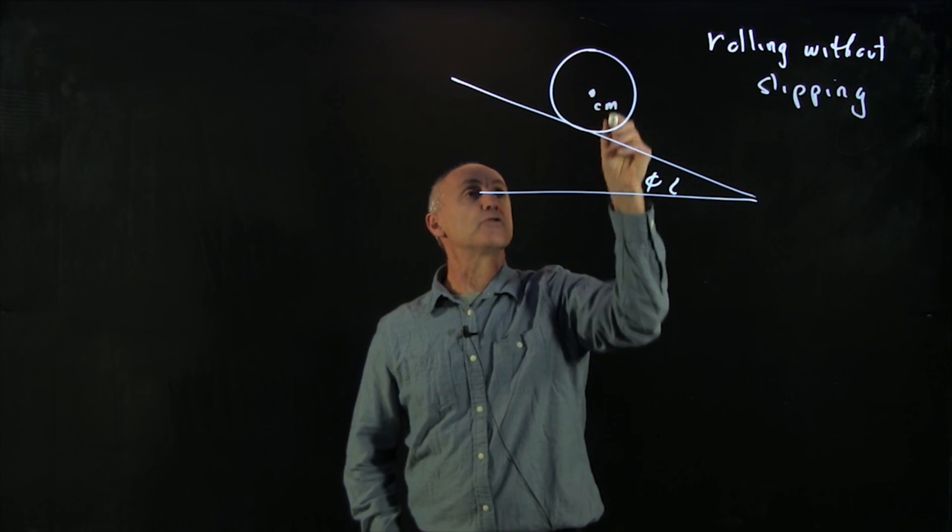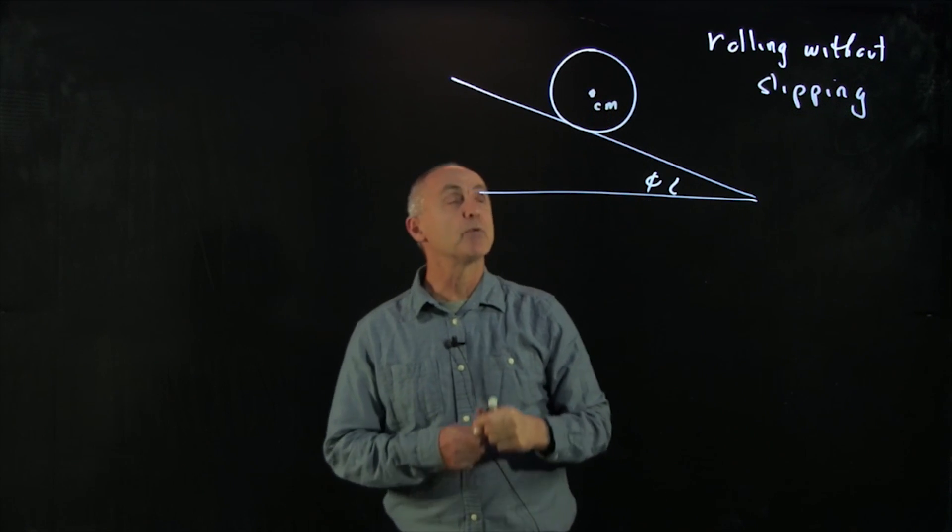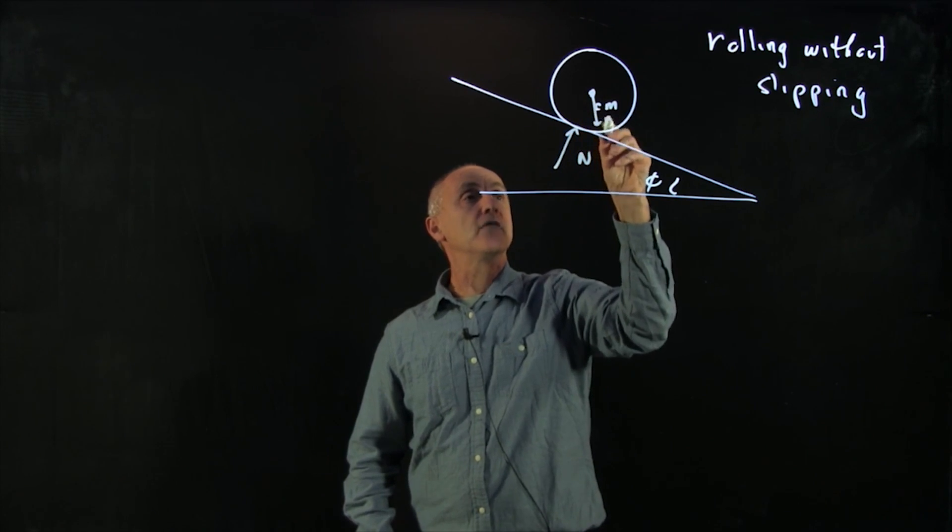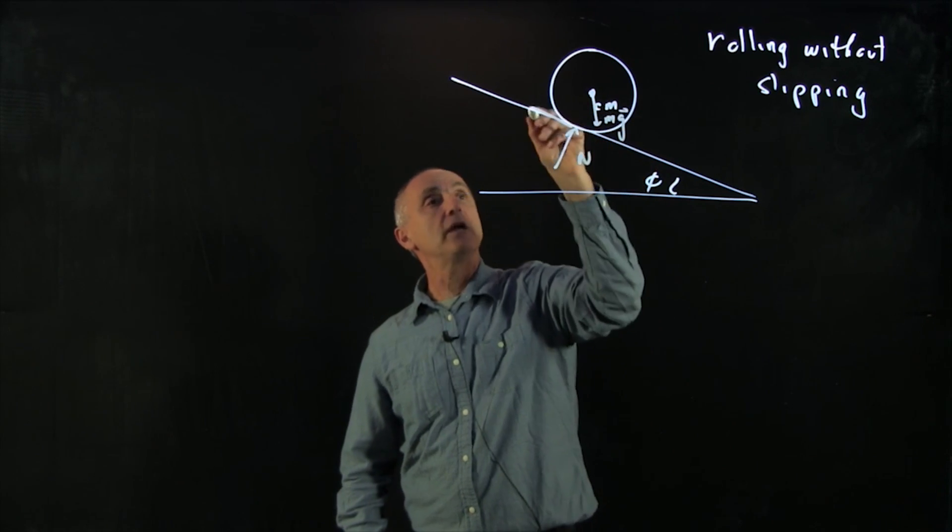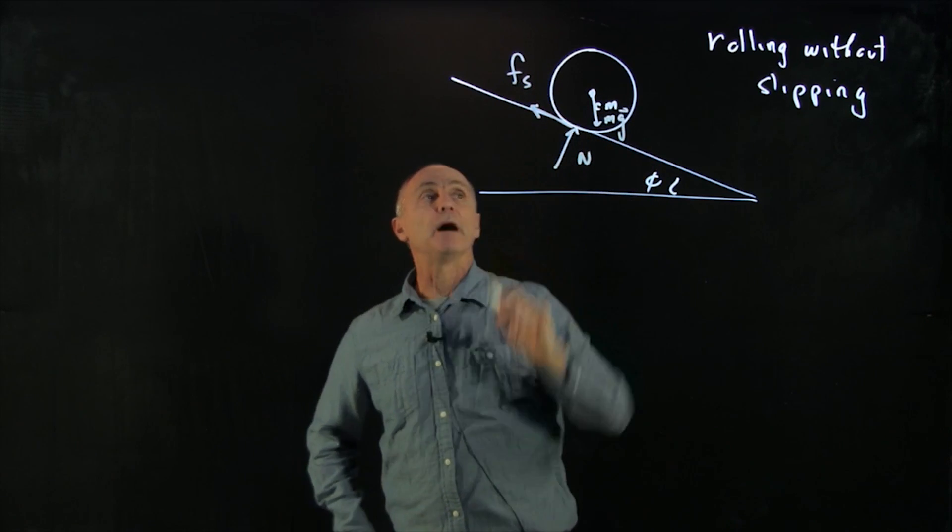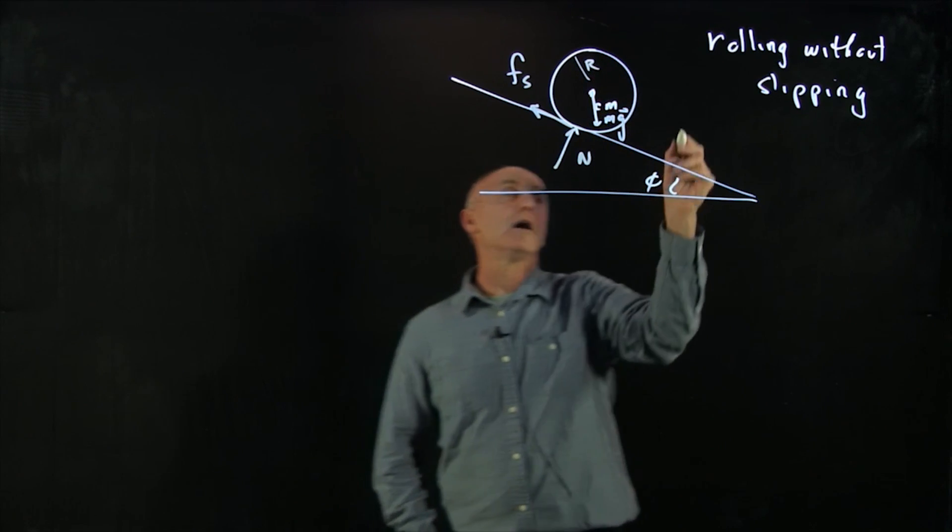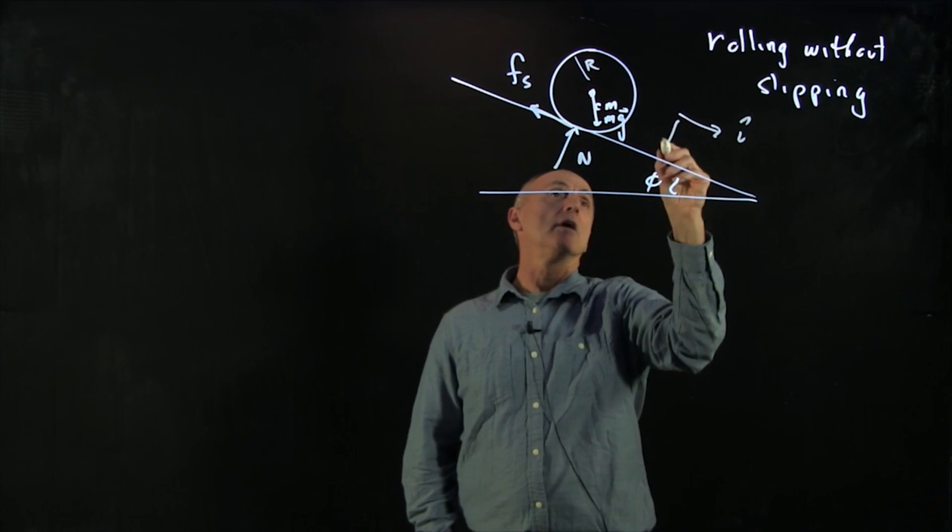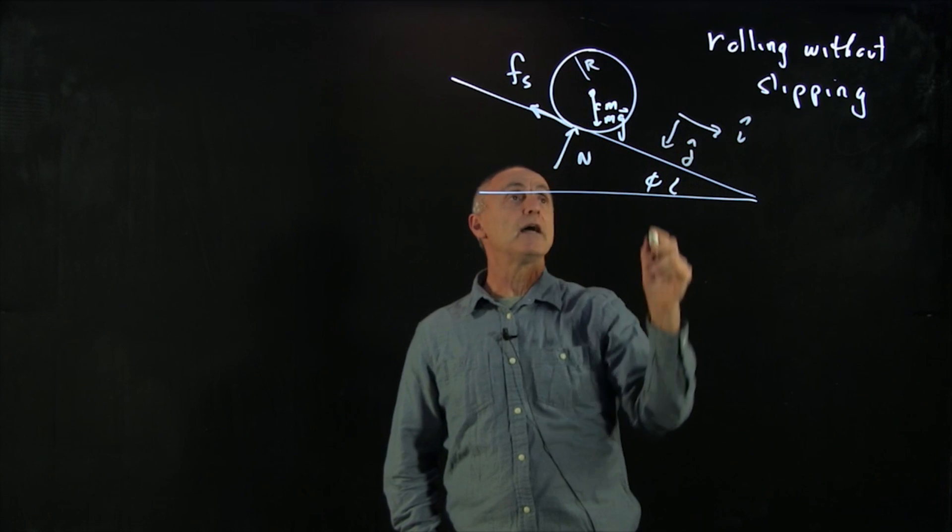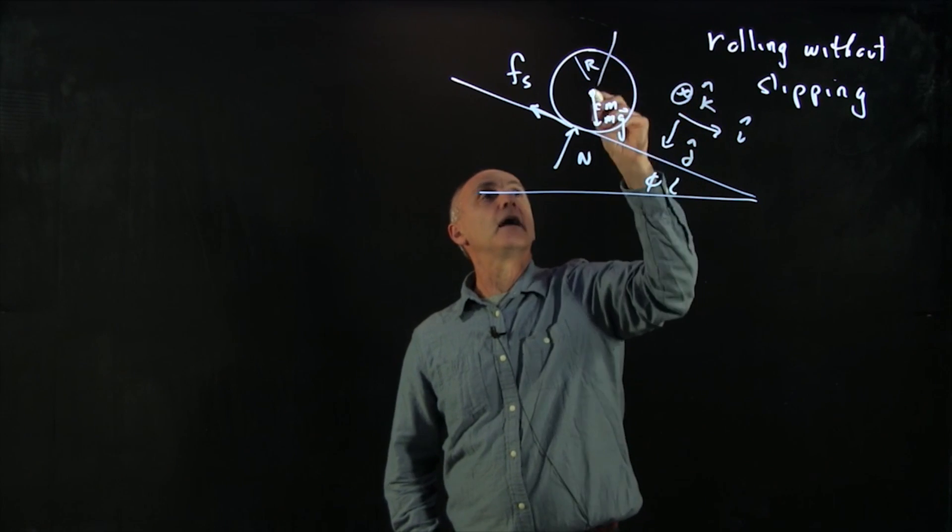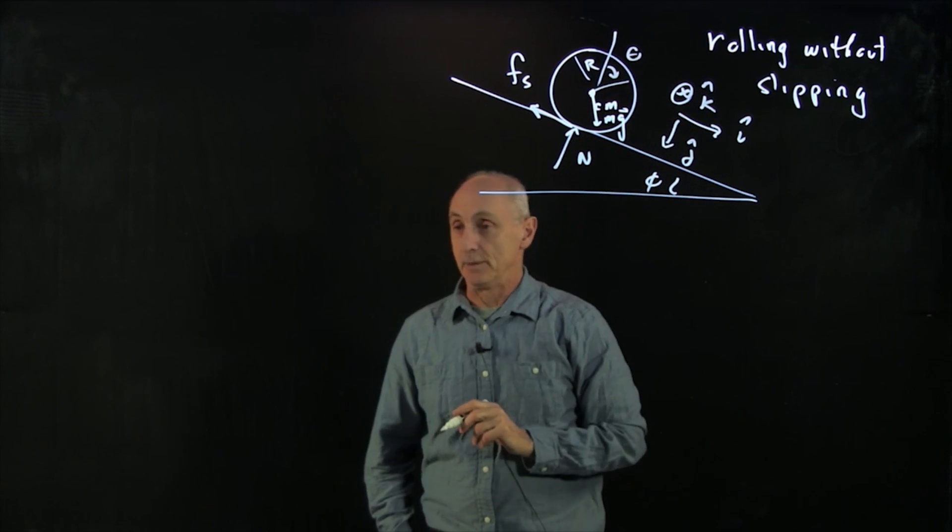So let's consider the center of mass. And what we want to do is draw the forces. We have a normal force, we have gravity, and we have the friction force about the center of mass. Our wheel has a radius r. Let's choose a coordinate system i hat j hat, and so we have a right-handed system k hat. And that will correspond to some angle theta.